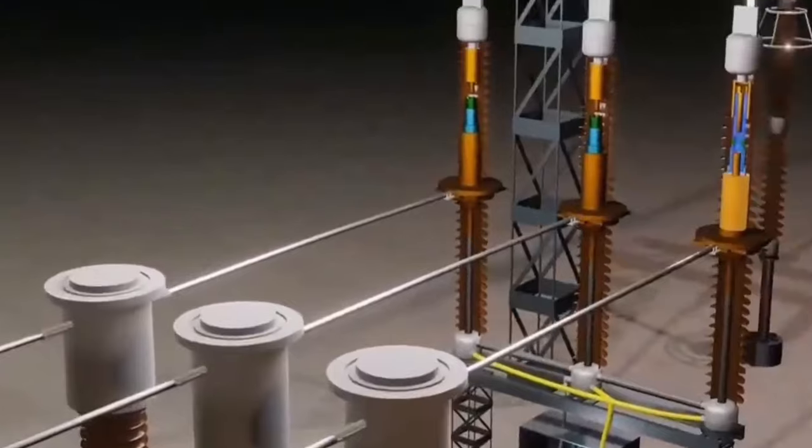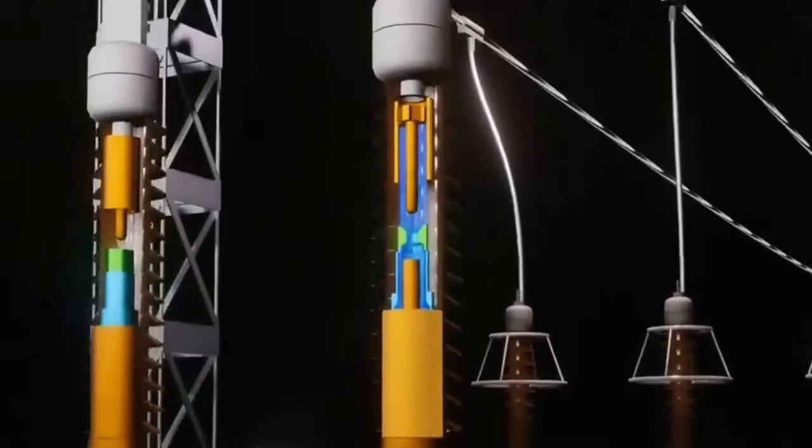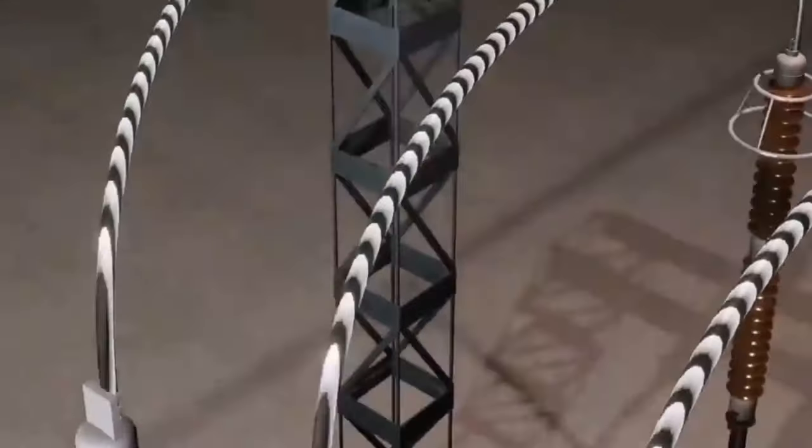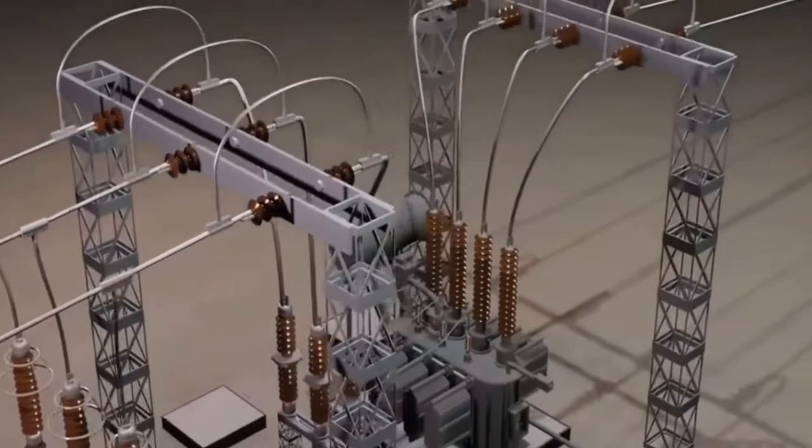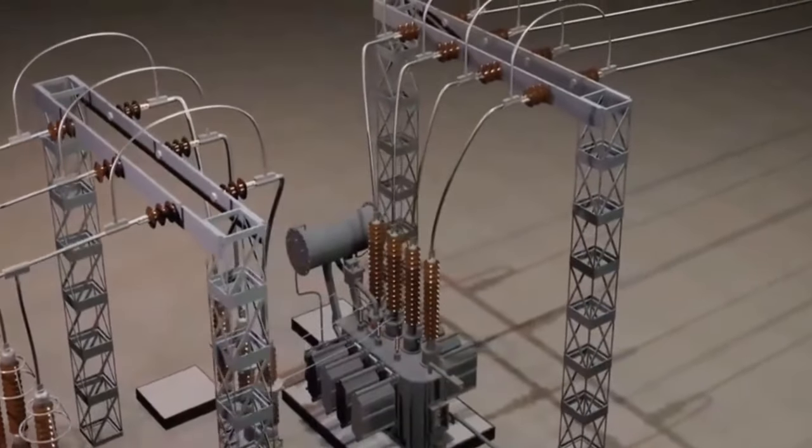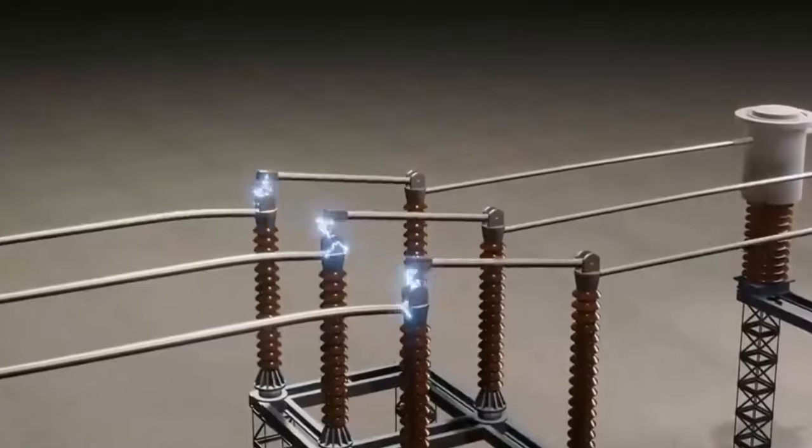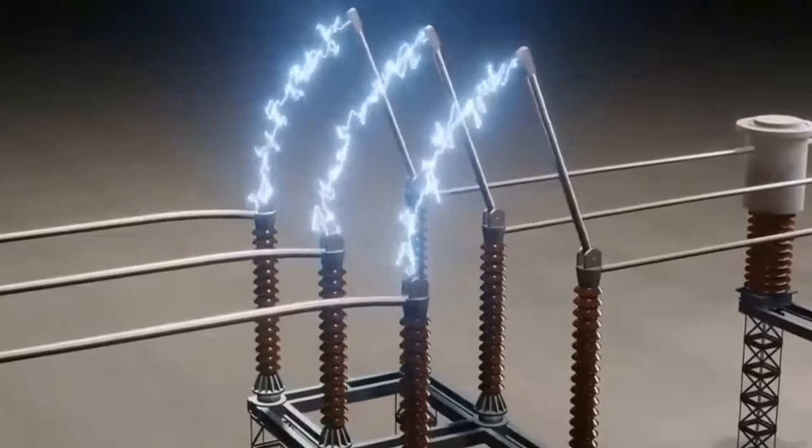Here is an issue. Suddenly disconnecting the high-voltage transmission line will cause a current surge. Since transformers are usually connected behind the circuit breaker, the sudden return of a powerful current can lead to voltage instability, even damaging the transformer. So unless there is a major accident, high-voltage transmission lines are generally not disconnected.